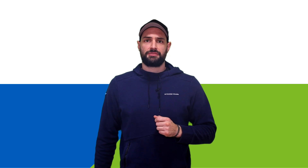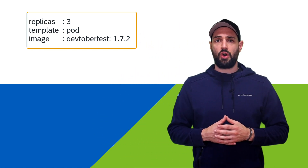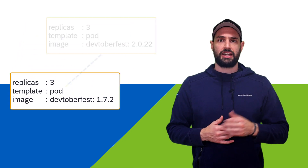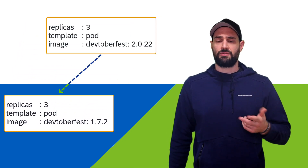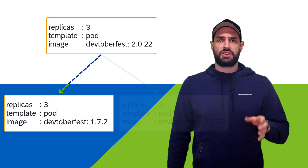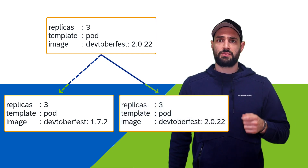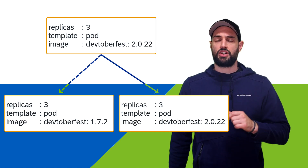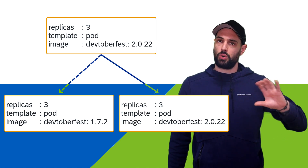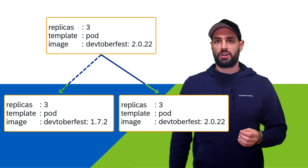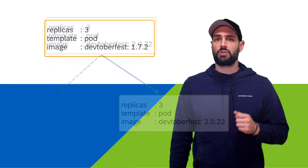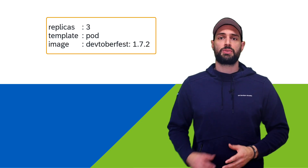The next feature is automated rollouts and rollbacks, which is really important. These function by using revisions of your deployed application containers. Kubernetes can take changes that alter the revision number — such as updates to the container image, container port, and volume mounts — and schedule new pods containing that revision. Kubernetes will then gradually redirect traffic to new instances while automatically shutting down old revisions. If issues occur on newer revisions, Kubernetes can automatically roll back to the older revision, as these are saved within the Kubernetes infrastructure.